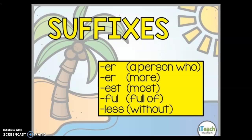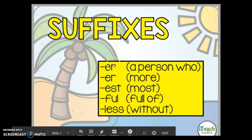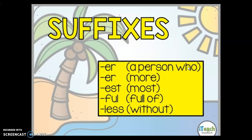The suffixes we are going to focus on today are '-er,' which could mean 'a person who.' For example, if we have the root word 'work' and we add '-er' to it, the word becomes 'worker,' which means a person who works. Or if we have the root word 'bake' and we add '-er' to the end, we would then have the word 'baker,' which would mean a person who bakes.